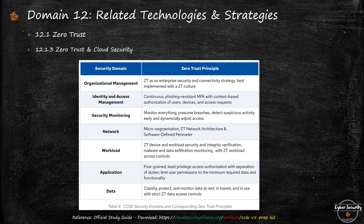This table from the book maps security domains to corresponding Zero Trust principles. For organizational management, it's the enterprise security and connectivity strategy to implement Zero Trust — it has to become a culture, an approach, not just a tool. For identity and access management, you need continuous phishing-resistant MFA with context-based authorization, meaning requests must be meaningful and contextual. For security monitoring, you monitor almost everything — you presume you are already breached, so your mindset must be proactive. You detect suspicious activities early and dynamically adjust access.